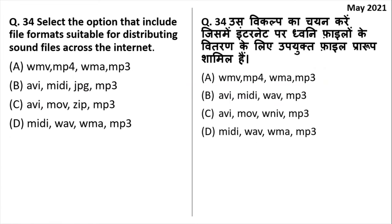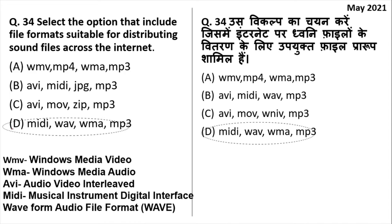Select the option that includes file formats suitable for distributing sound files across the internet. WMV is Windows Media Video — a video file. AVI is also audio-video. MIDI stands for Musical Instrument Digital Interface. WAV is an audio file format. MP3 is one of the most famous audio file formats. The right answer is option D, which contains audio-specific formats including MIDI, WAV, and MP3.